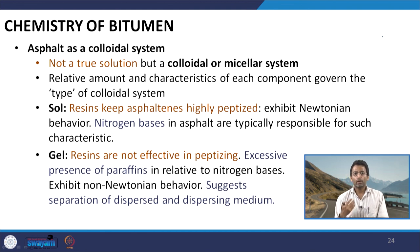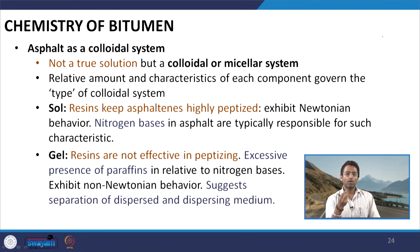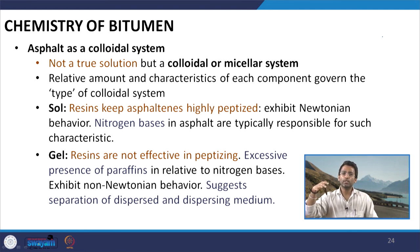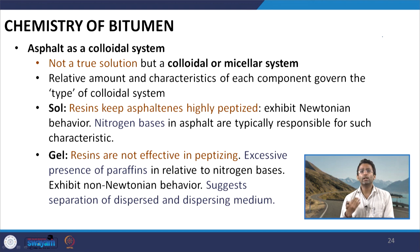There are two types to describe the colloidal system of bitumen: the sol type system and the gel type system. In the sol type system, we have sufficient aromatics and resins which disperse the asphaltenes properly — we have appropriate amount of resins which will peptize the asphaltenes and appropriate amount of aromatics which will keep these peptized asphaltenes dispersed within the bitumen system. This type of bitumen typically exhibits Newtonian behaviour, and studies say that nitrogen bases present in the bitumen are basically responsible for such characteristics.